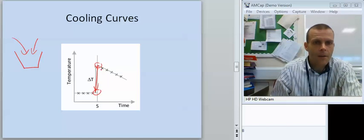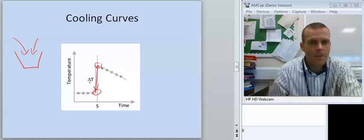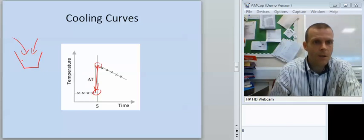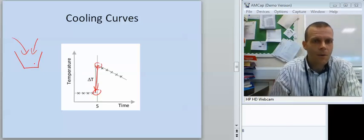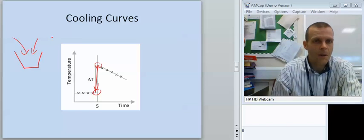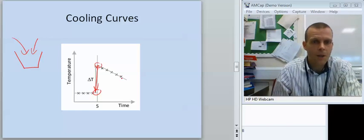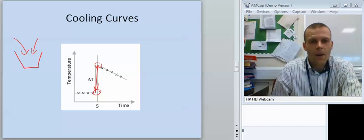And what you can do is you can extrapolate back to the point at which you mix them. And that difference there will give you a more accurate maximum temperature change. Because when you try this in the labs, it's maybe going to be difficult for you to see when has my thermometer reached its maximum value, what's the biggest number that it gets to. If you use this cooling curve, it's a way of getting a more accurate temperature change value.